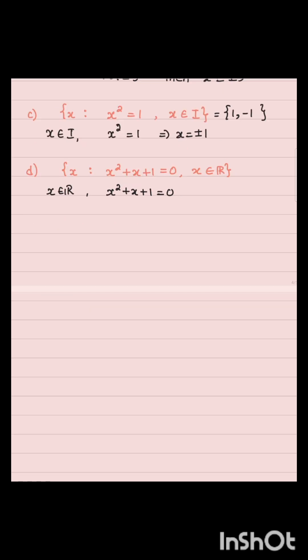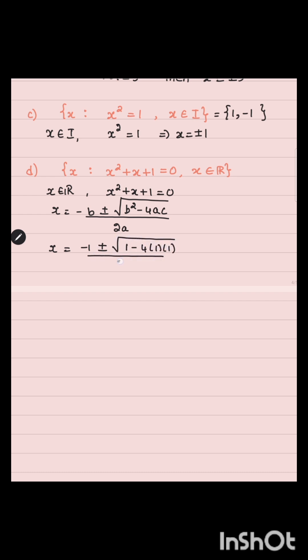For the set where x belongs to the real numbers and x squared plus x plus one equals zero, we apply the quadratic formula: x equals minus b plus or minus square root of b squared minus 4ac, divided by 2a. This gives x equals minus one plus or minus square root of 1 minus 4, divided by 2, which equals minus one plus or minus square root of minus 3, divided by 2. Since this involves a complex number and x must belong to the real numbers, there is no real solution, so this set is equal to the empty set.